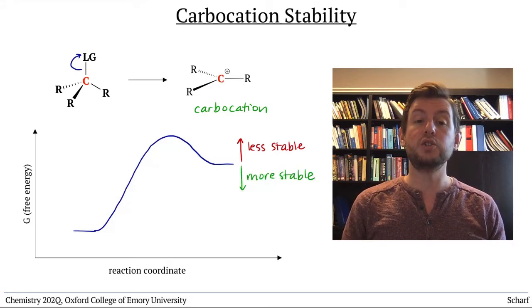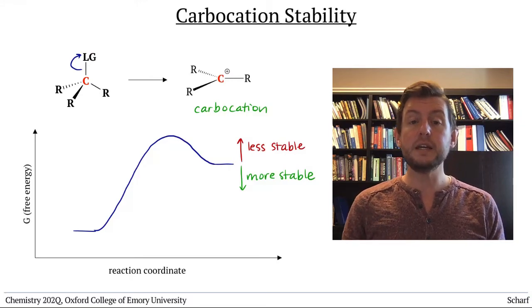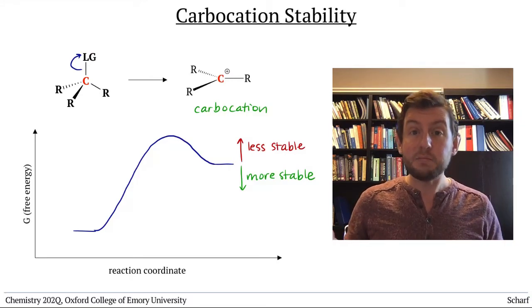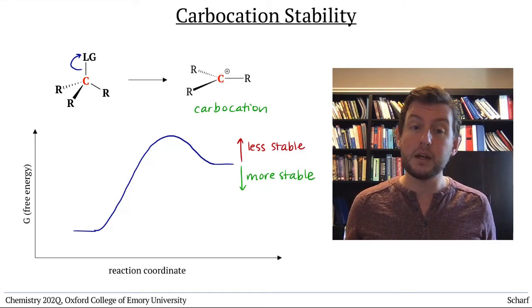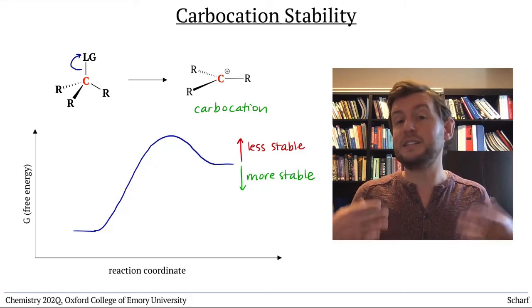In order for an SN1 reaction to occur, the intermediate carbocation needs to be relatively stable. Otherwise it's just too difficult to form, and the SN1 reaction doesn't even get started.